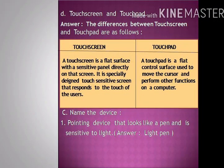Question D: Touchscreen and touchpad. A touchscreen is a flat surface with a sensitive panel directly on the screen. It is a specially designed touch-sensitive screen that responds to the touch of the user. A touchpad is a flat control surface used to move the cursor and perform other functions on a computer.